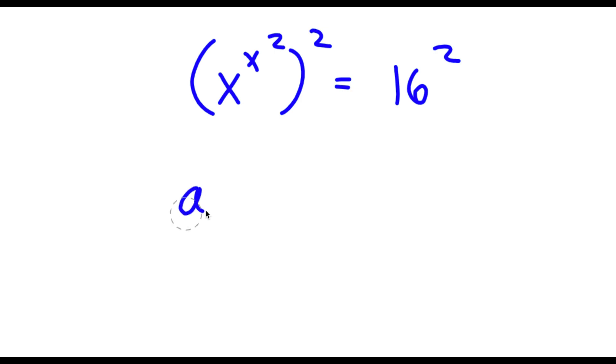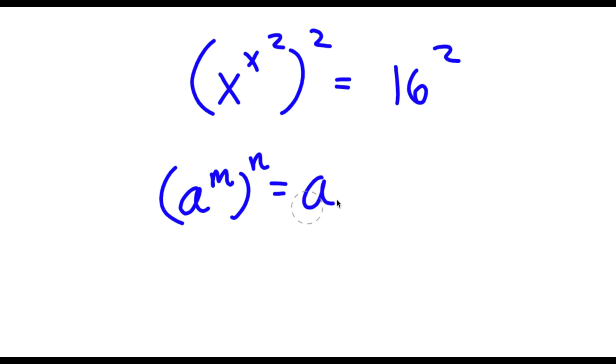Now if I have something in the form a to the power of m to the power of n, this is simply equal to a to the power of m times n.